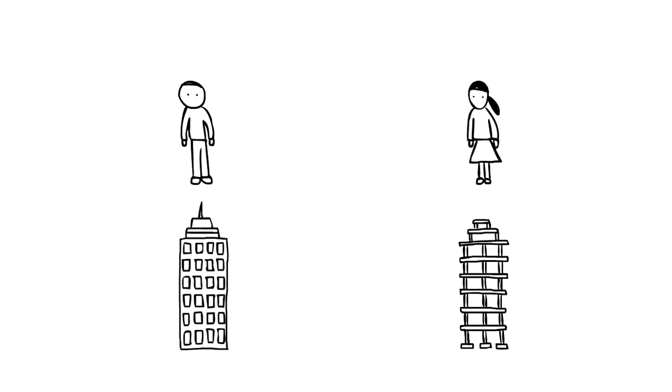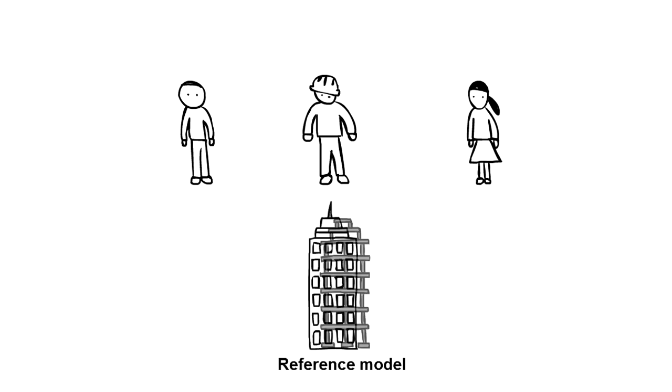You may have already noticed, but it becomes even more obvious once Don the contractor gets into the picture, that Joe and Martha were actually working on separate BIM models and only used the other party's model as a reference.